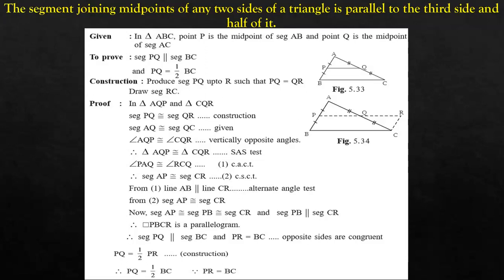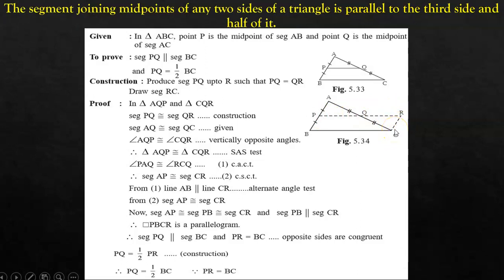In order to do this we need to do a small construction. Produce PQ up to R such that PQ is equal to QR, and draw segment RC. This is the construction.